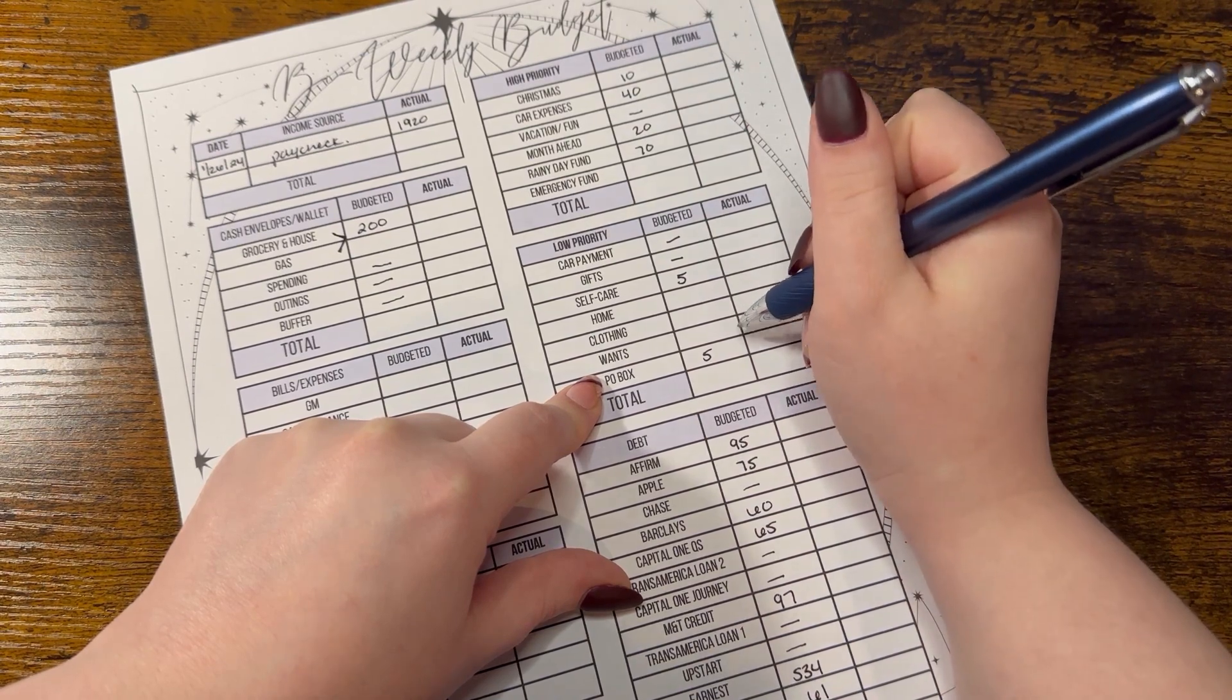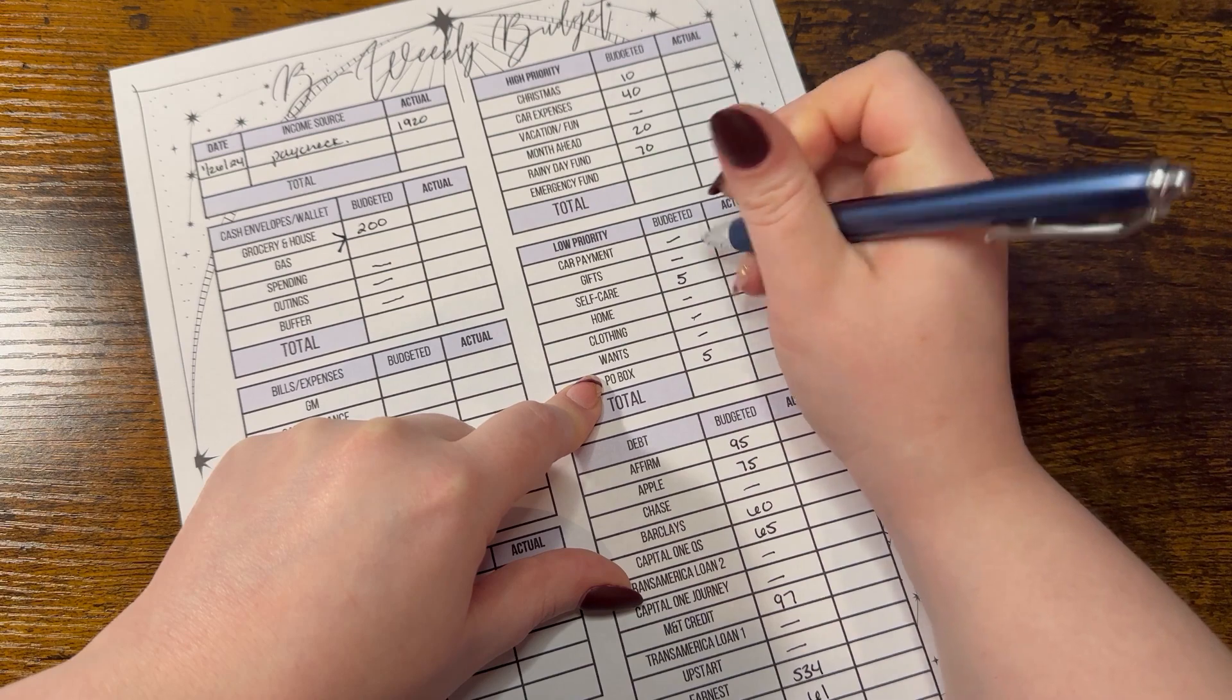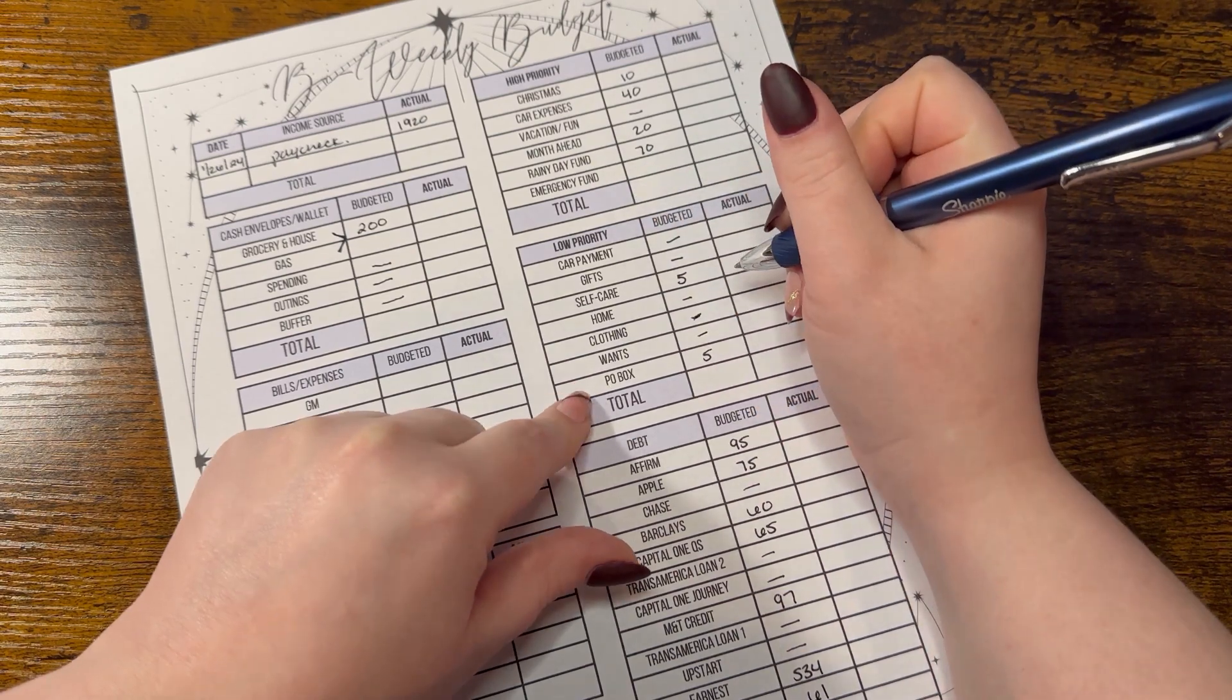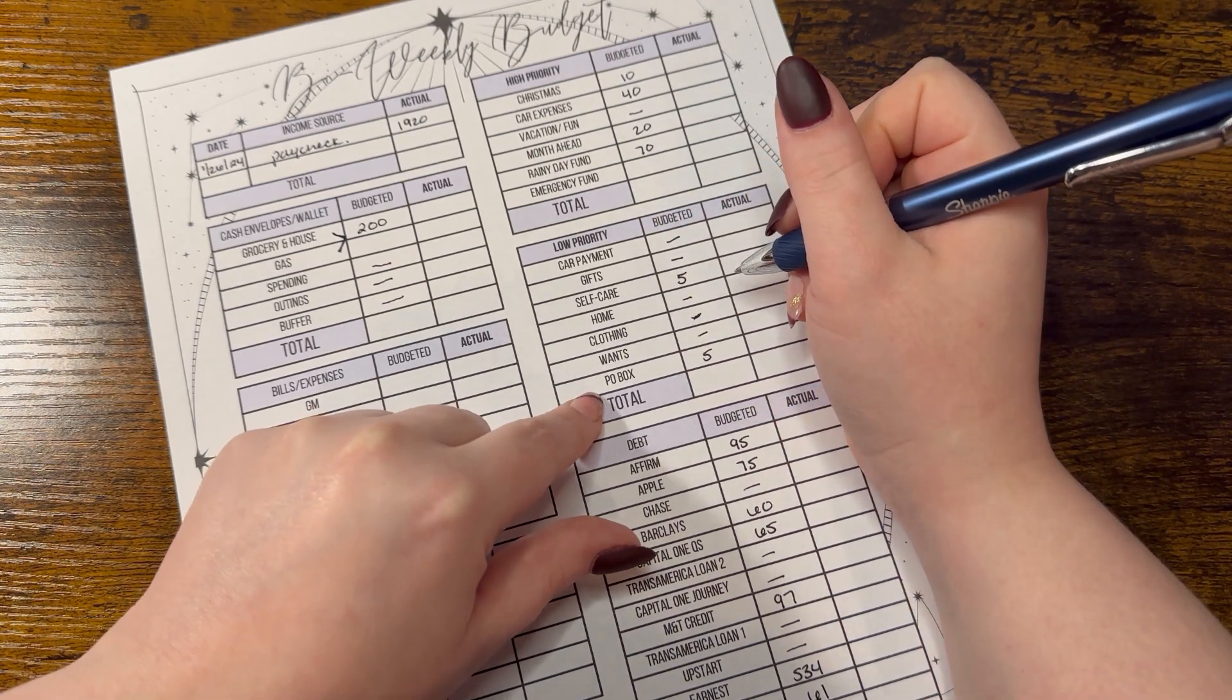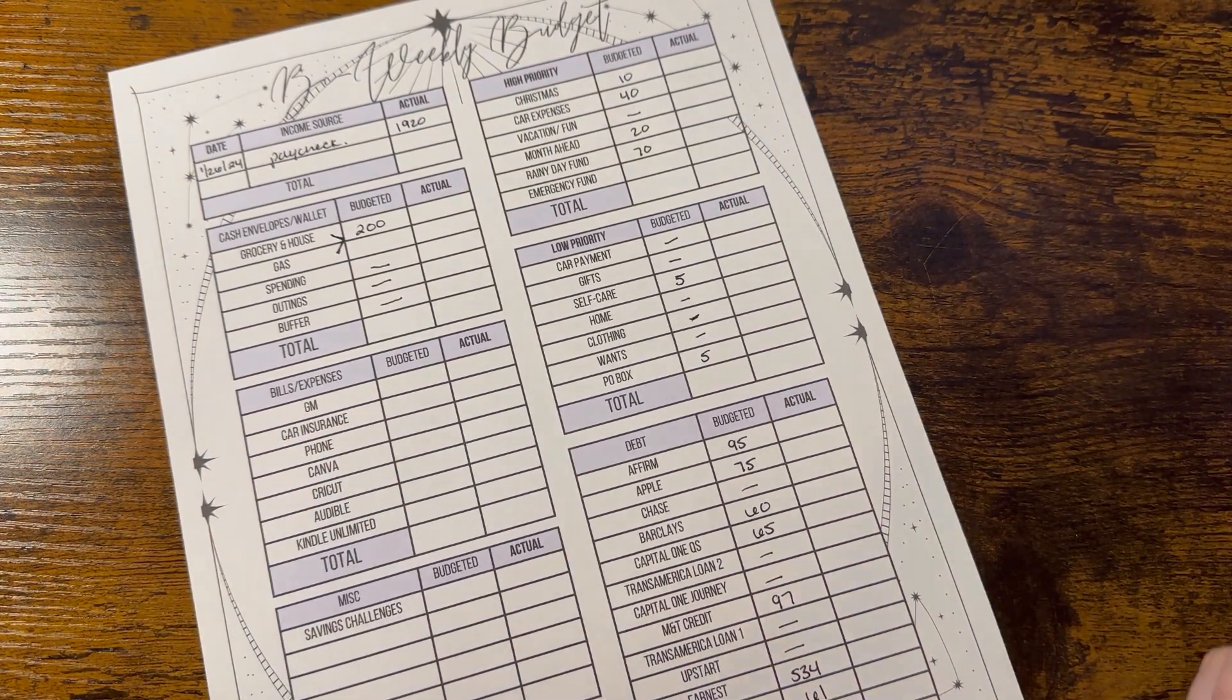I did just open a P.O. Box, so I'm going to take some money out of the envelope to pay myself back. But I'm going to have to pay this every six months, so we're just going to stick with the $5 for right now.